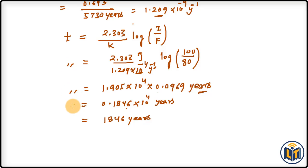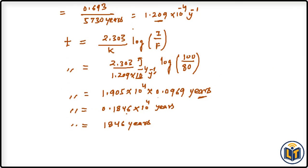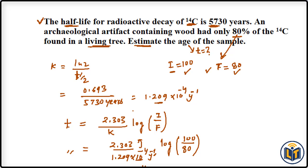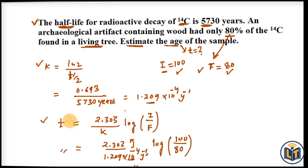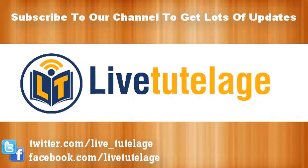To summarize: first I calculated the rate constant K from the half-life using the first-order reaction relation, then I applied the first-order reaction formula to calculate time T, which gives us the age of the sample. Thank you.